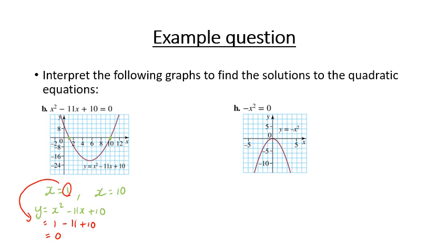If we substituted our 10 in, we would end up with 10 squared, take 11 lots of 10, plus 10. We know 10 squared's 100. We take 110, and we plus 10. Again, we get an answer of 0. So we can say, yes, both of these answers are correct. They're both solutions because we've double-checked by substituting our values back in.